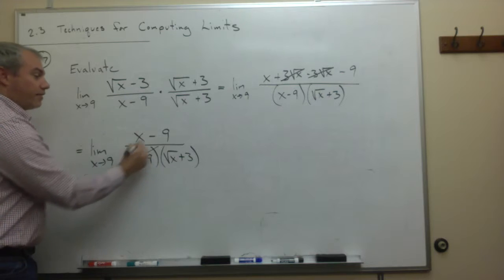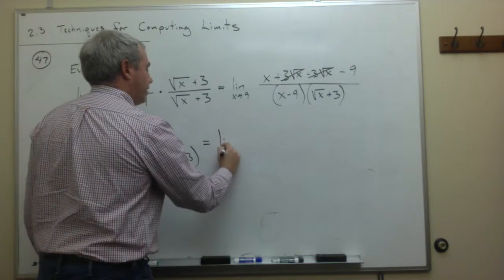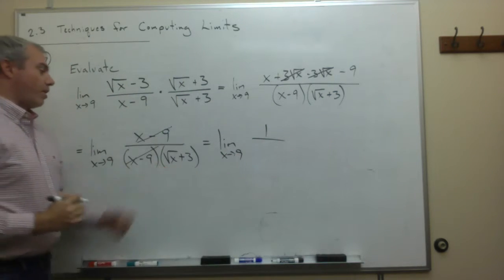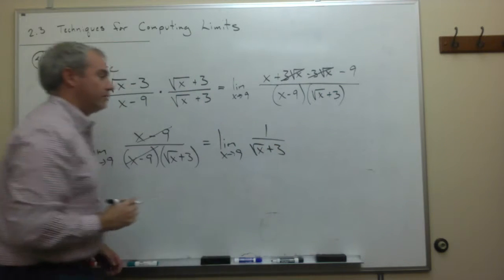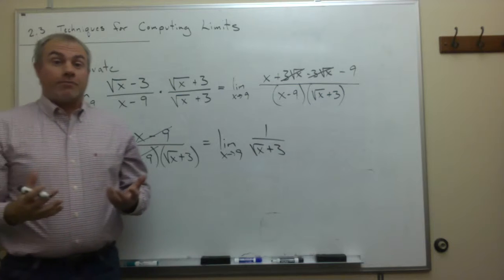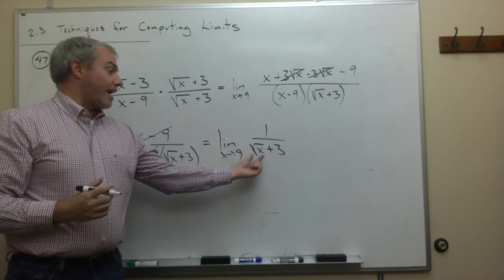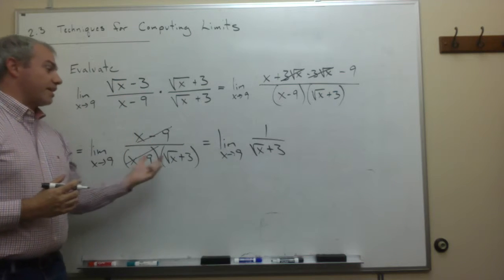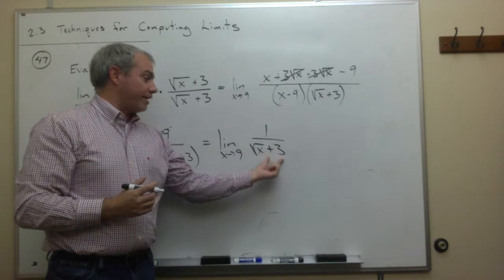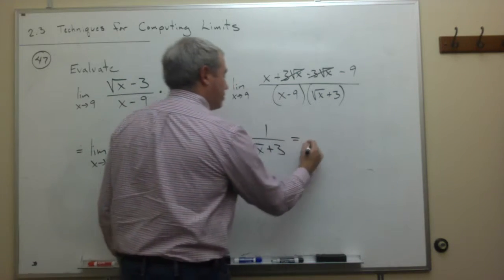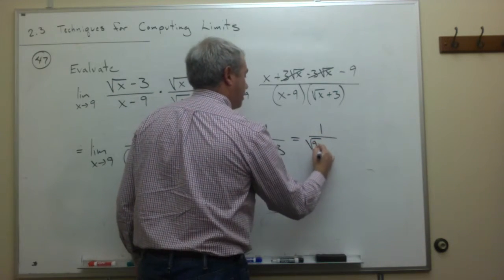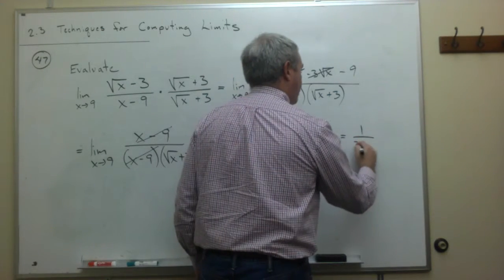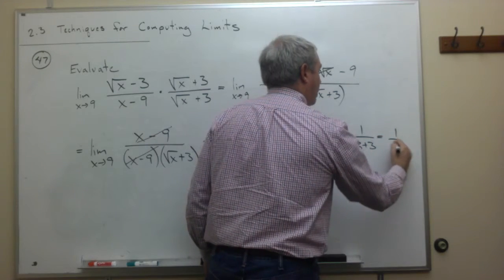After canceling the x minus 9s, we're left with the limit as x goes to 9 of 1 on top, and the square root of x plus 3 on the bottom. We've gotten rid of the major problem, which was division by 0 from the x minus 9. Now if I plug in 9, I do not get division by 0. Doing so, I get 1 over the square root of 9 plus 3. The square root of 9 is 3, so I get 1 over 3 plus 3, or 1 sixth.